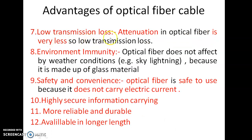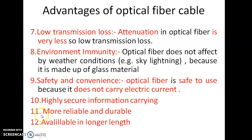Then there is low transmission loss — attenuation in optical fiber is very less, so low transmission loss occurs. Environmental immunity: optical fiber is not affected by weather conditions like sky lightning, because it is made up of glass material, there is no conductor, and information is in the form of light, which is not affected by electric and magnetic fields. Safety and convenience: optical fiber is safe to use because it does not carry electric current. It also provides highly secure information carrying and is more reliable and durable.